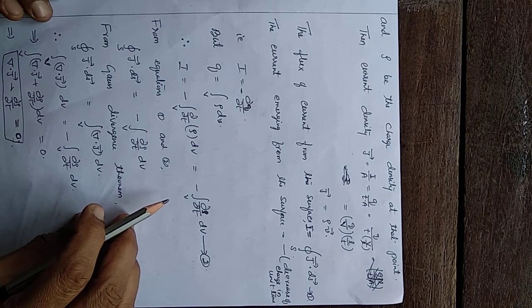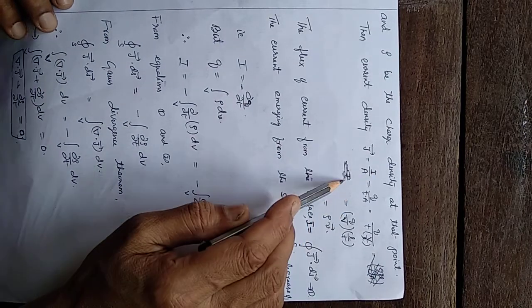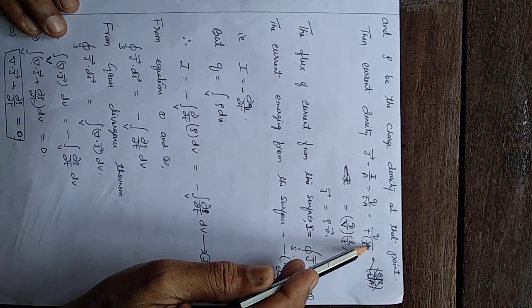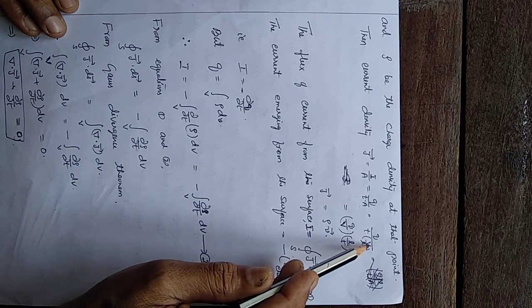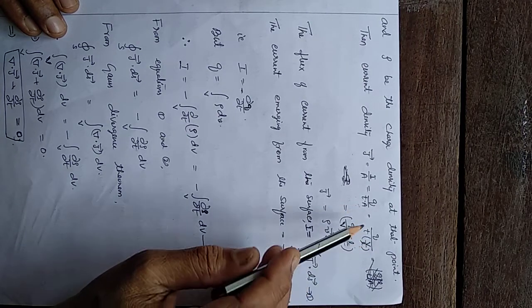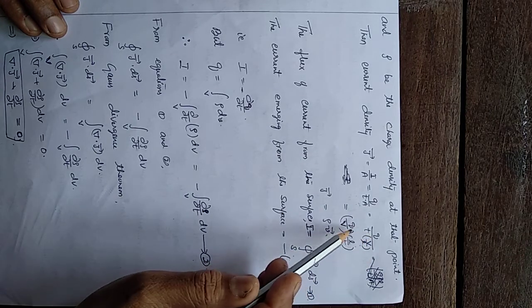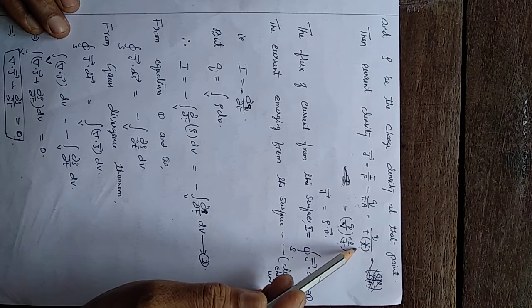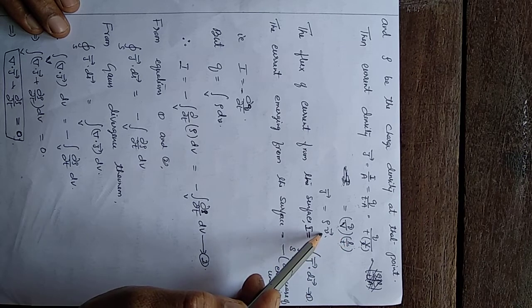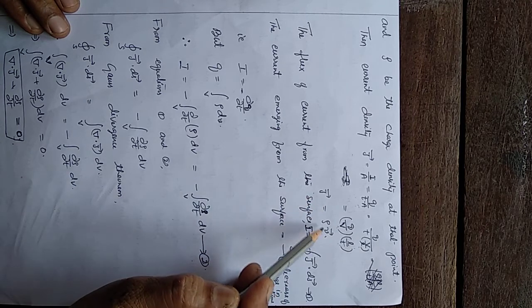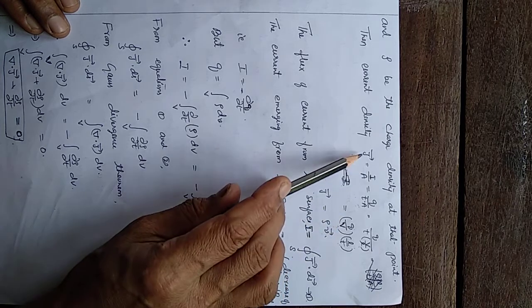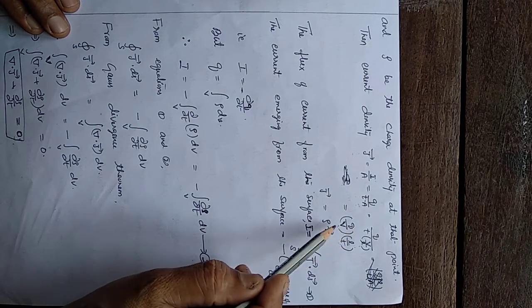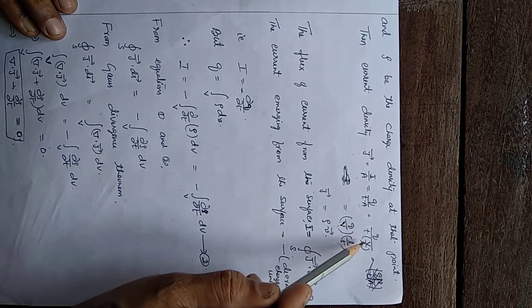Current flowing in a conductor of unit area of cross-section is the current density, I/A. Since I = Q/T and A = V/L, rearranging gives J = (Q/V) × (L/T). Here, Q/V is charge density ρ, and L/T is the velocity v of the charge. Therefore, current density J is also given by ρv: current density is either I/A or ρ into v.